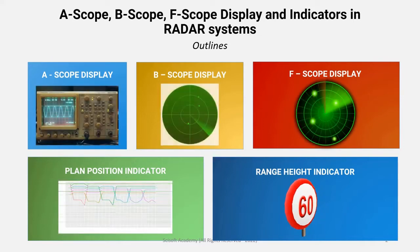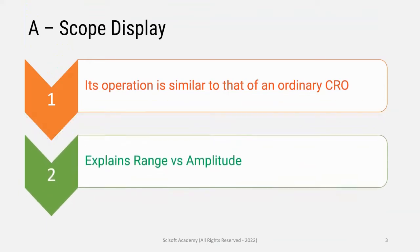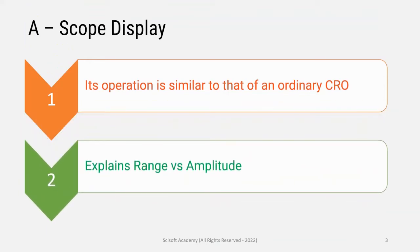Let's start with the A scope display. This is the ordinary CRO — that is the cathode ray oscillator. In the lab, we have a time versus amplitude graph. The A scope display is a particular graph, but in this graph the X and Y axes are different — that is range versus amplitude.